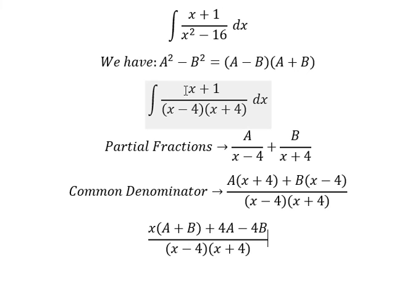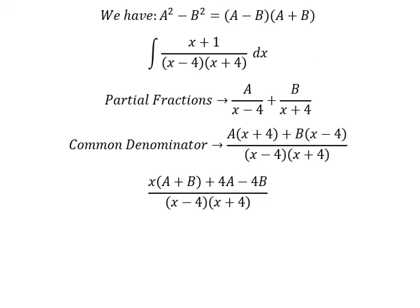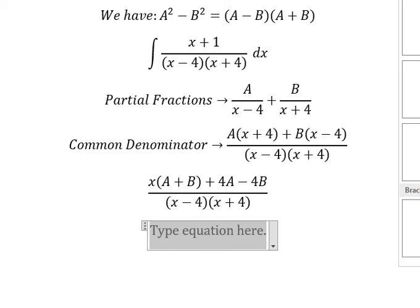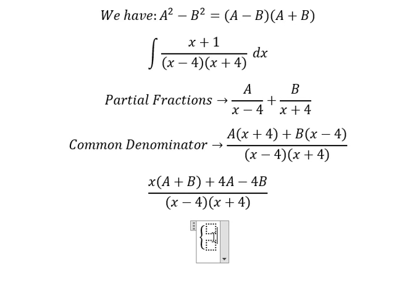Now we look into coefficients. We see that we have x, so A + B equals 1. 4A - 4B equals 1. So we will have a system of equations: A + B = 1, 4A - 4B = 1.